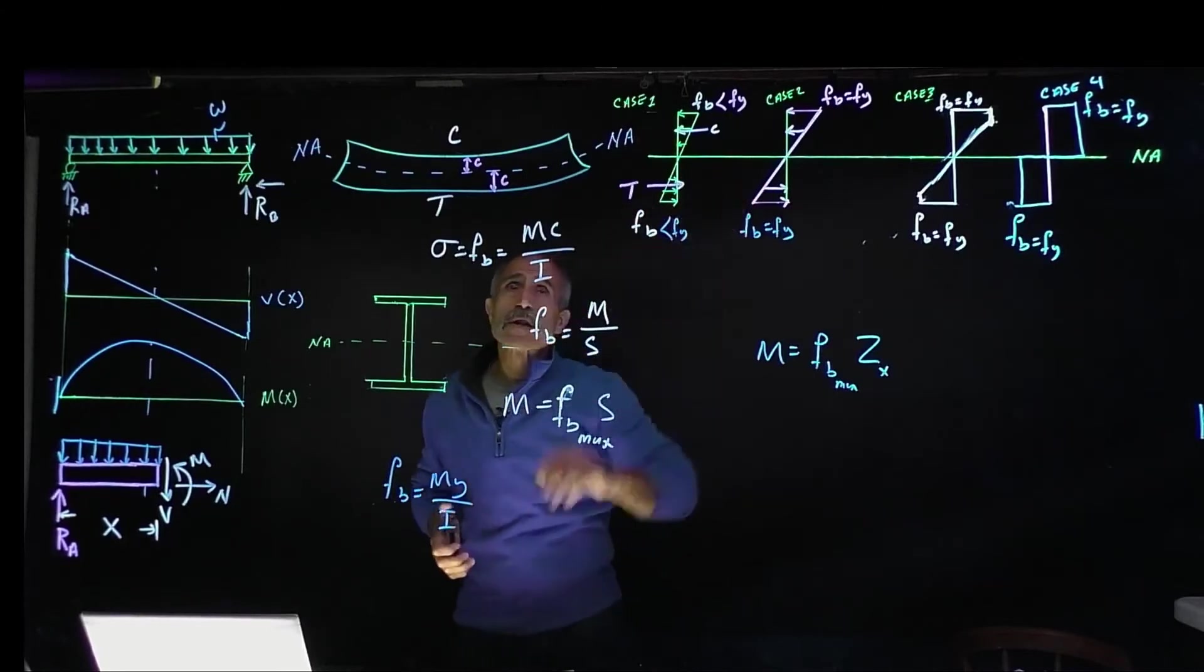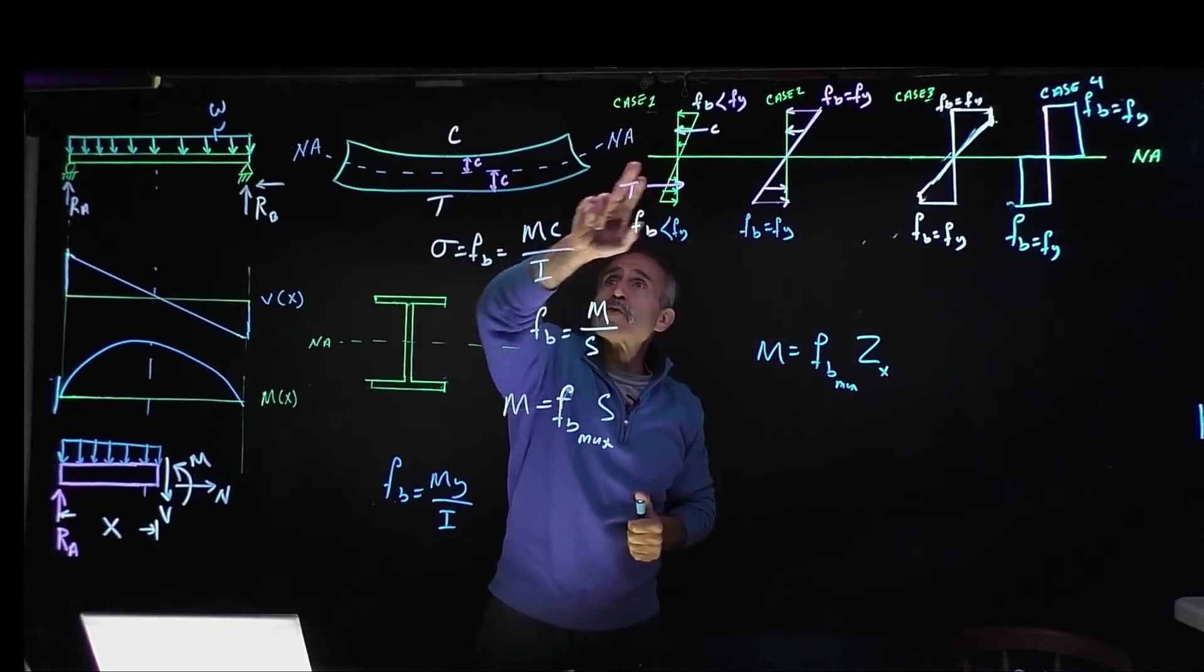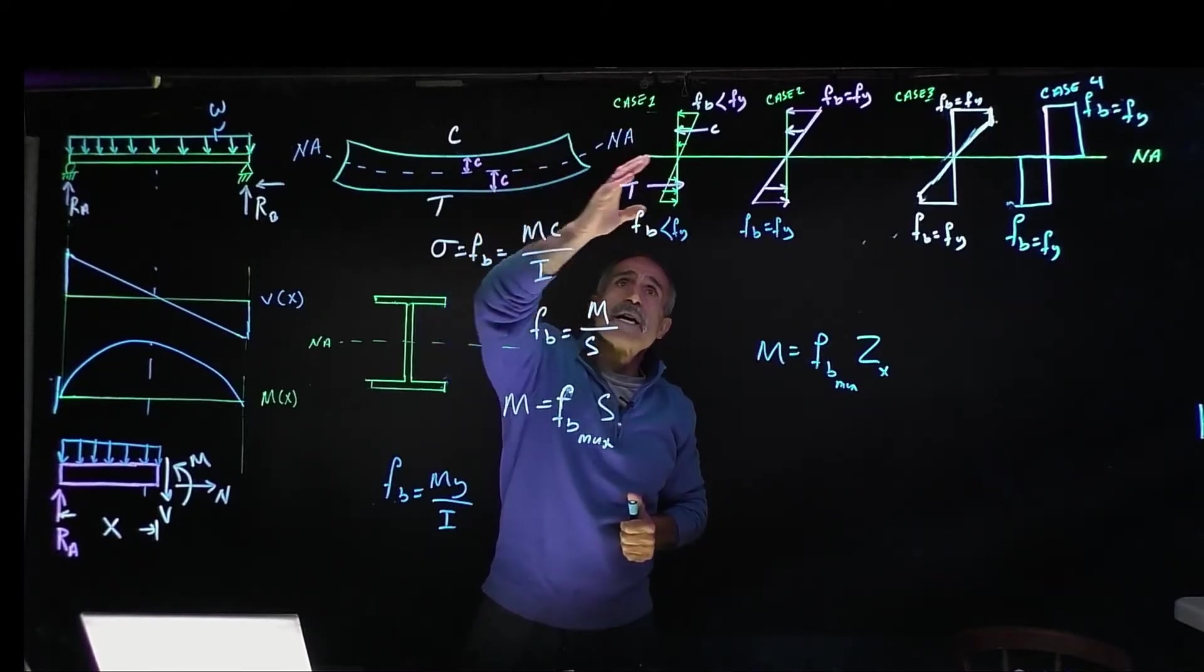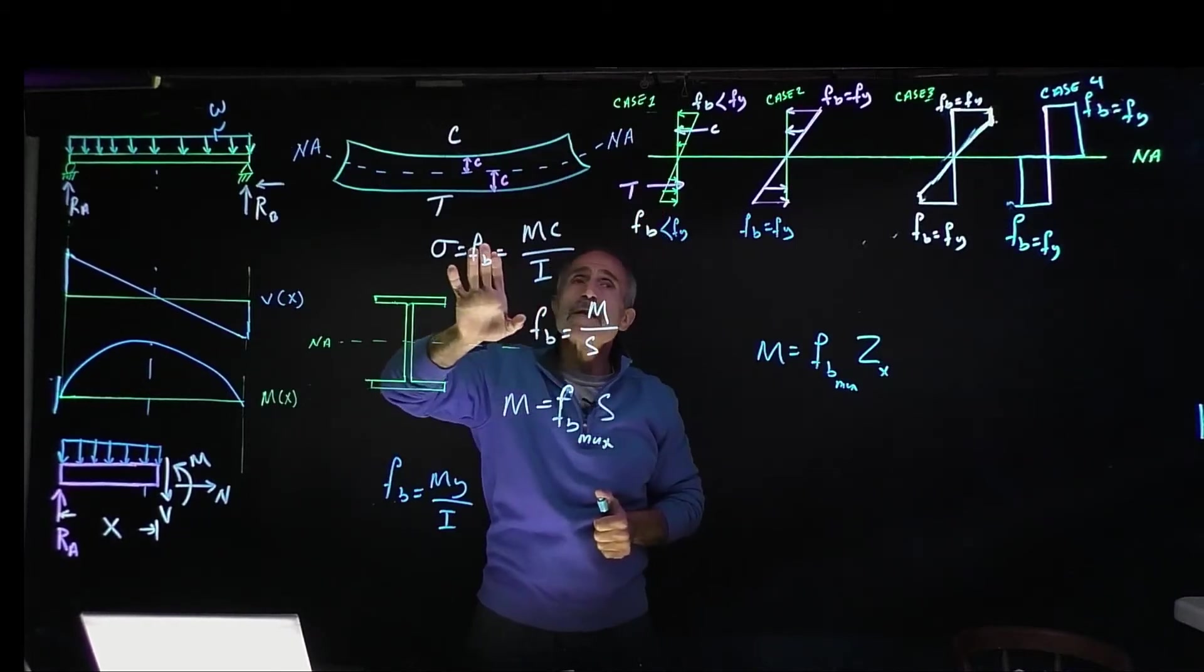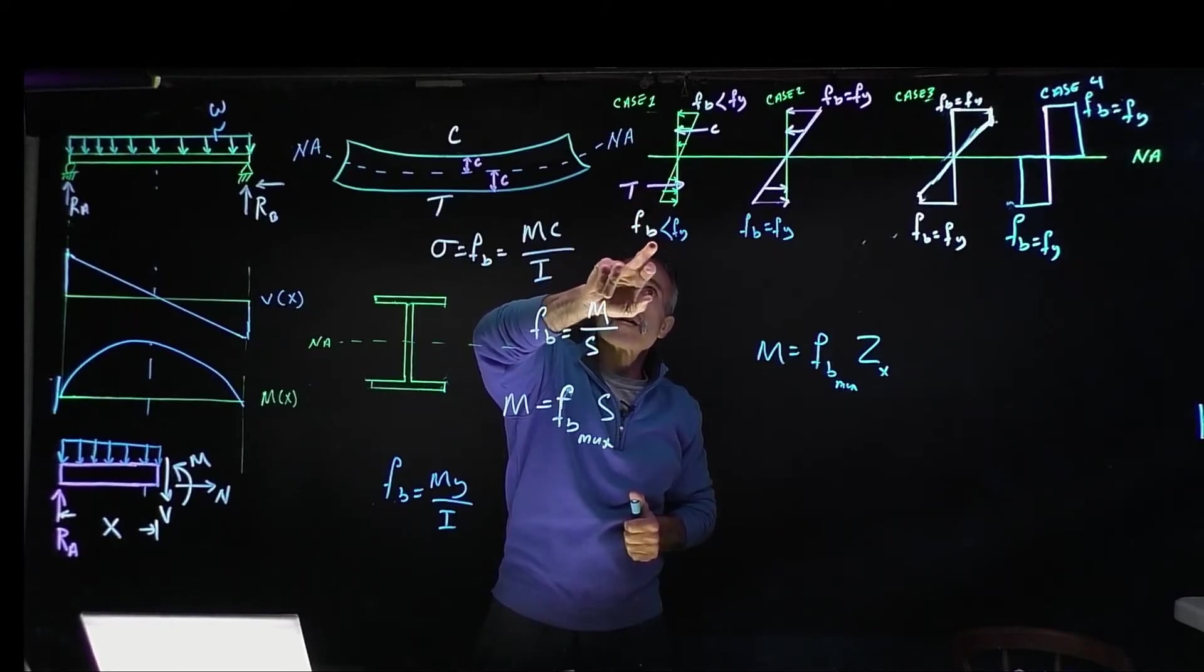As we come down to the center, there's the neutral axis. There's nothing, it's zero, there's no bending stress there. To continue down, the maximum bending moment is right at the furthest point, which is right here. In our case, this is less than yield stress.